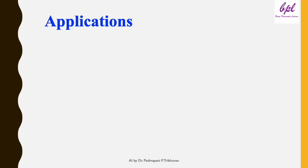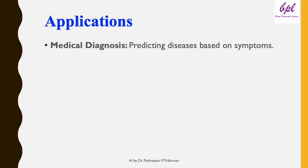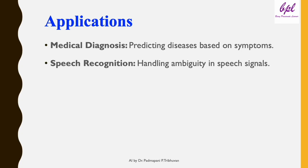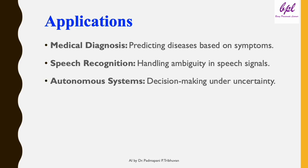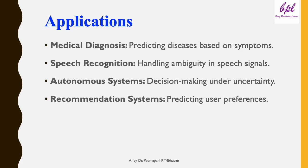Applications of probabilistic reasoning. Probabilistic reasoning is not just theory — it powers many AI applications. In medical diagnosis, it predicts diseases based on symptoms. In speech recognition, it helps AI understand words despite noisy inputs. Autonomous systems like self-driving cars use probabilistic reasoning to make safe decisions in uncertain environments. And recommendation systems use it to predict what you might like to watch, read, or buy — whether it's Netflix recommending your next show or AI assisting doctors.